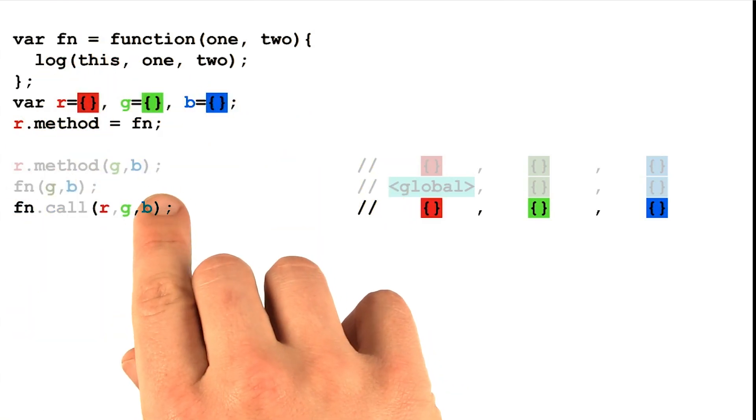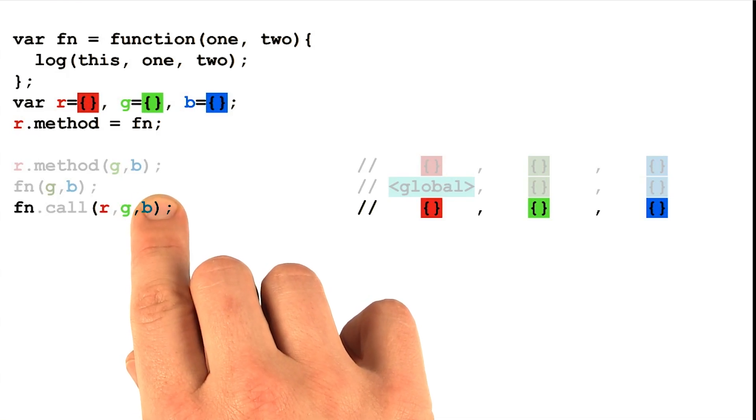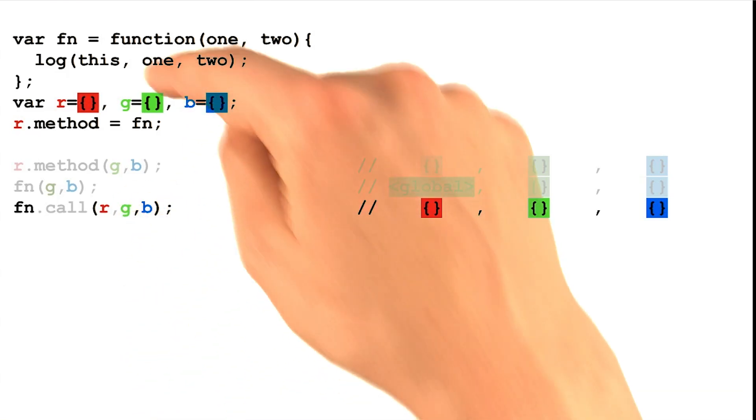When using dot call, we pass in one extra value at the beginning of the argument list, and that value will be bound to the parameter this.